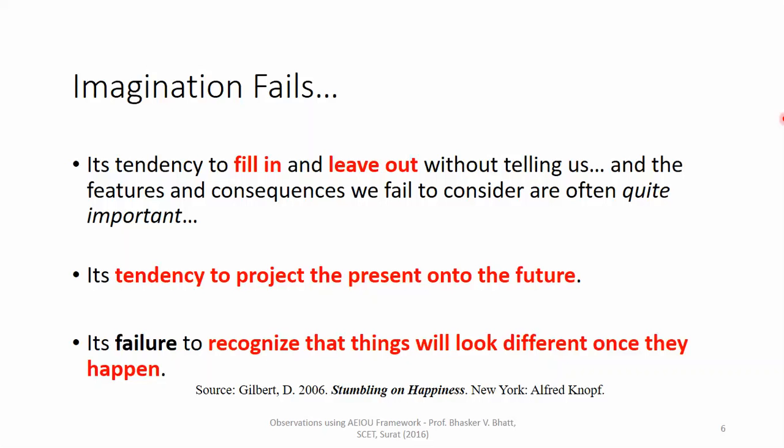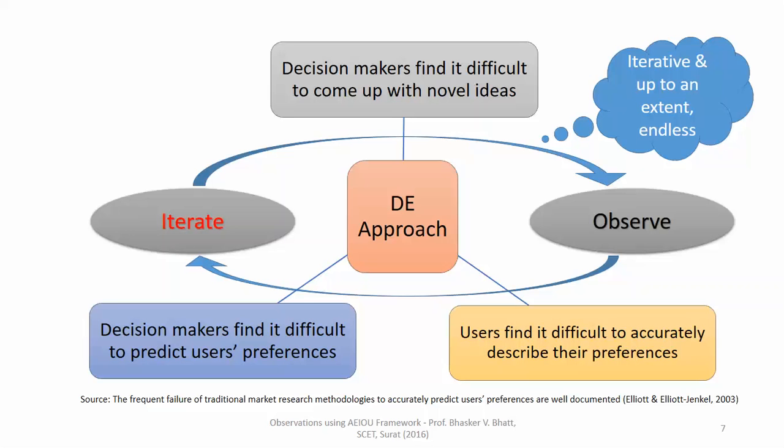We generally see things from one point — what in civil engineering is called a point of perception or point of perspective. But there are many other viewpoints that should be looked into. To identify all of them, we need to iterate on the same situation using a number of alternative means. We need to carry out iteration rather than rely solely on imagination.